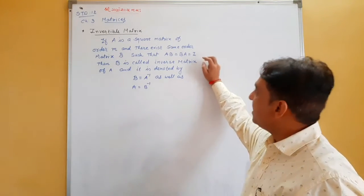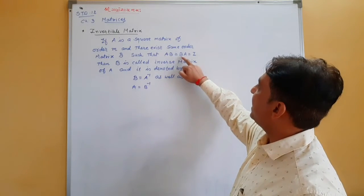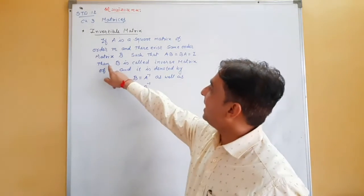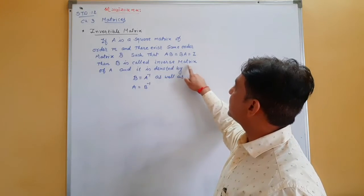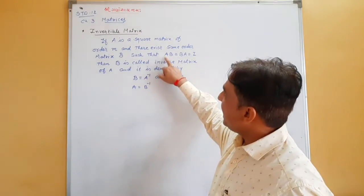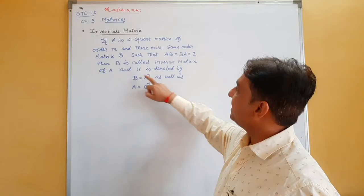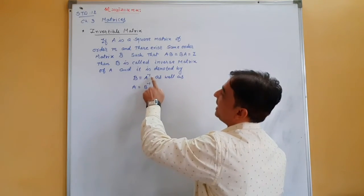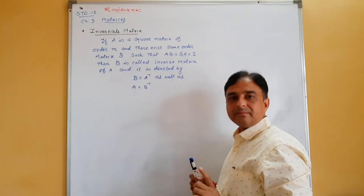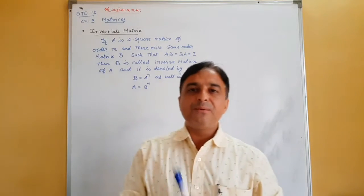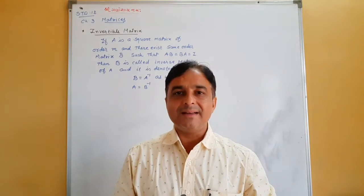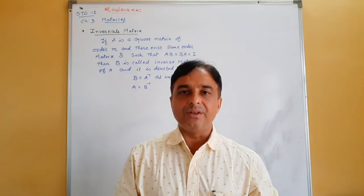That means the product of two matrices is an identity matrix — for a 2x2 it is [1,0;0,1], and for a 3x3 it is [1,0,0;0,1,0;0,0,1]. So if AB equals BA equals I, then B is called the inverse of A, and A is called the inverse of B. It is denoted as B equals A-inverse and A equals B-inverse. So if the product of two matrices is the identity matrix, then the two matrices are inverses of each other.